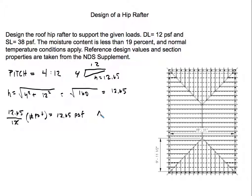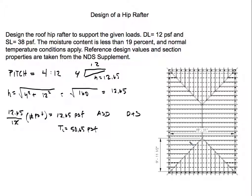Using ASD, we combine dead load plus snow load. Dead load in the horizontal projection is 12.65 psf plus snow load of 38 psf, giving a total load of 50.65 psf.